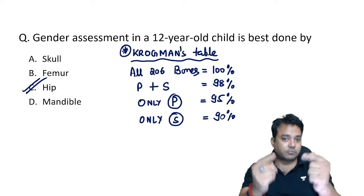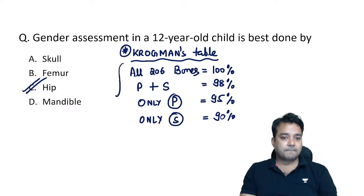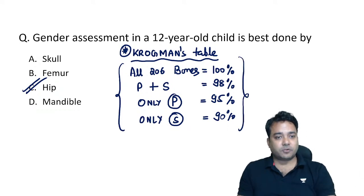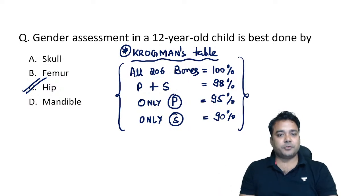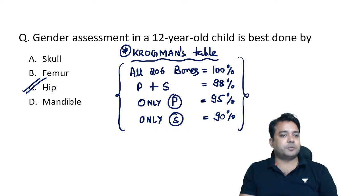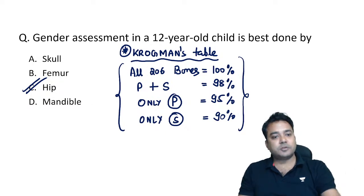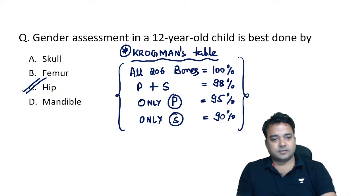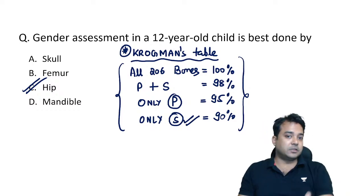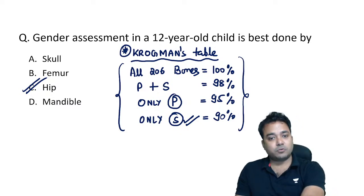These are the accuracy values asked repeatedly, so we need to revise them to avoid silly mistakes. Suppose hip/pelvis is not in the option — what is the next best answer? In the absence of pelvis, the next best answer will be skull. So we must remember at least this much data to solve any such questions.